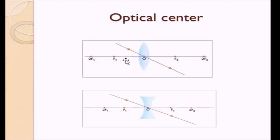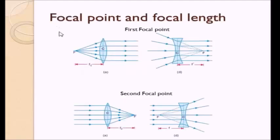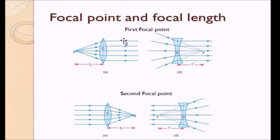There are certain things labeled here as F1 and F2, which are called the focal points. Let us see what focal points are. There will be two sets of focal points: the first focal point and the second focal point. The first focal point for a convex lens is the point from where, if rays of light originate, then on passing through the lens the rays of light will travel parallel to each other.